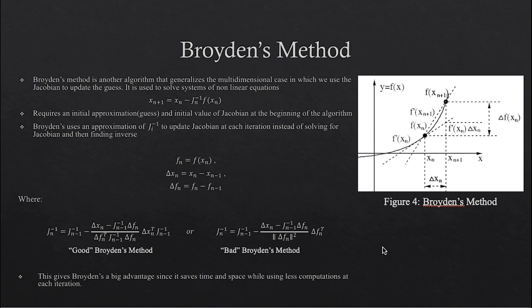Broyden's method requires an initial guess and an initial value of the Jacobian. The Jacobian is just a multidimensional generalization of the derivative, and it is a matrix. Broyden's method is just a generalization of Newton's method, where the derivative is replaced by the Jacobian. Notice how Broyden's method algorithm looks very similar to Newton's method algorithm. The value of the Jacobian would just be getting updated throughout each iteration. Newton's method for nonlinear equations needs to compute the Jacobian and inverse of the Jacobian at each iteration. Broyden's does not, however. It only computes the Jacobian once at the beginning of the algorithm to get the initial value, and then uses an approximation formula to the inverse of the Jacobian. This approximation formula will then update the inverse of the Jacobian directly at each iteration.